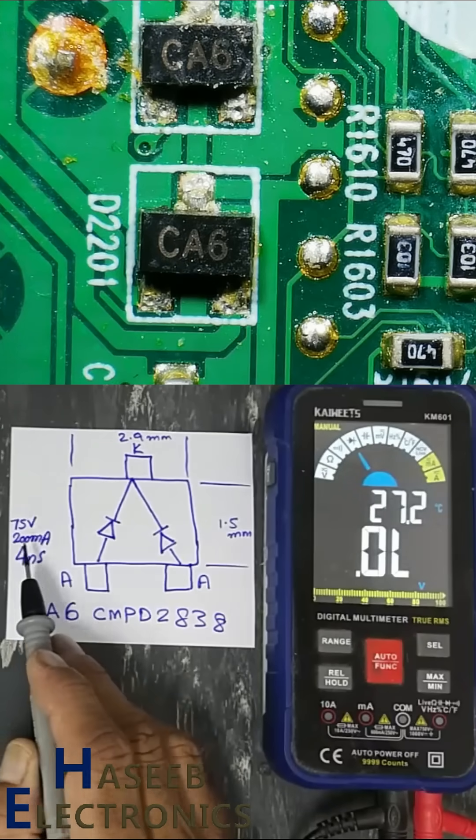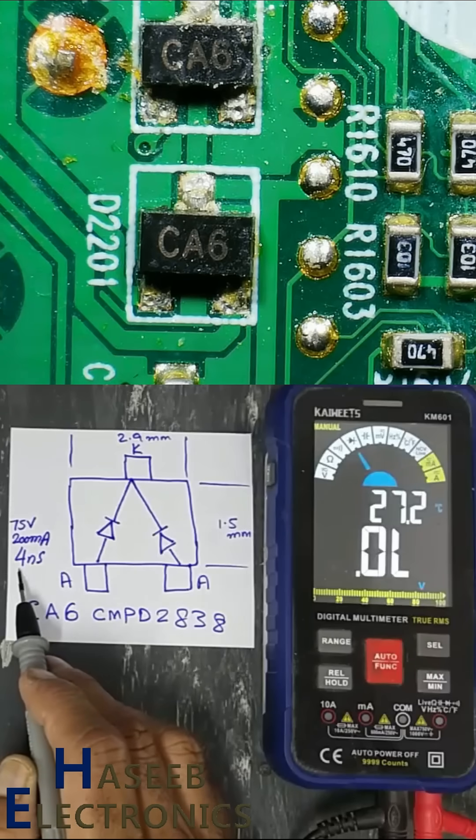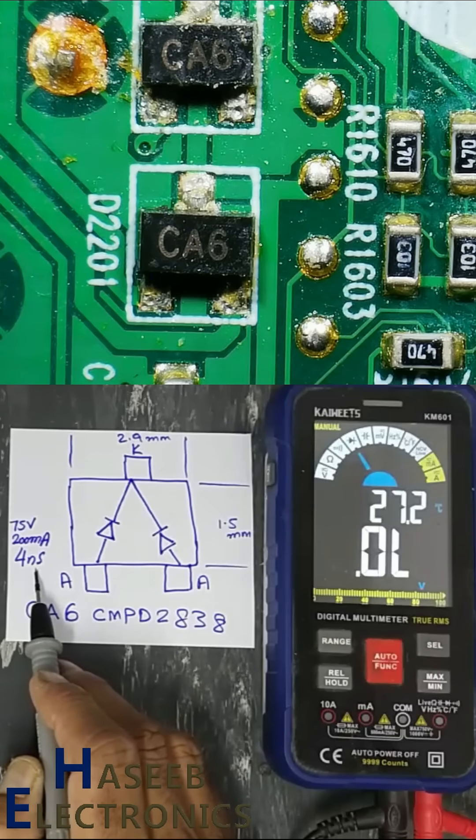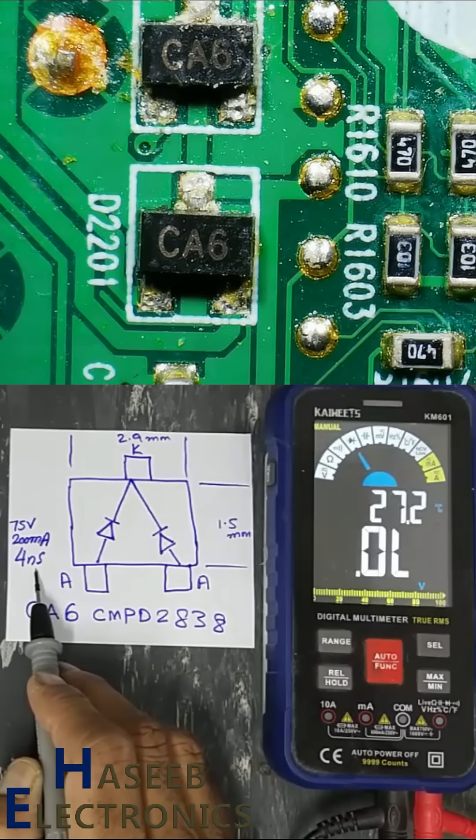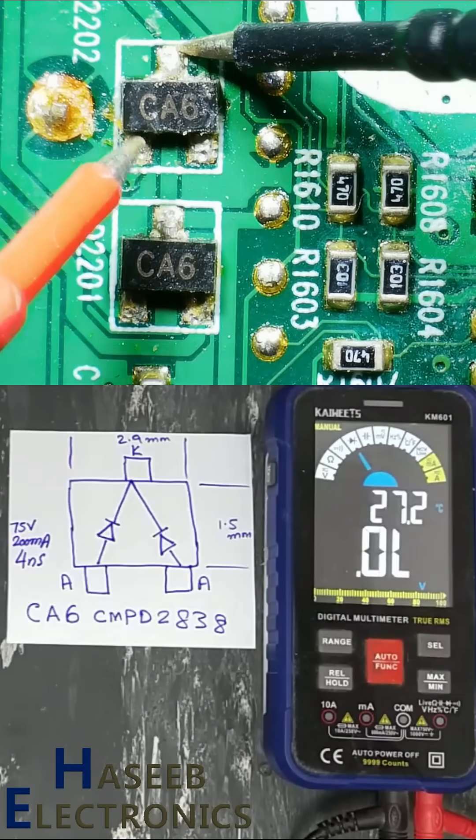The diode specifications are 75 volt, 200 milliampere forward current, 4 nanosecond recovery time. It is similar to 1N4148, a small signal switching diode.